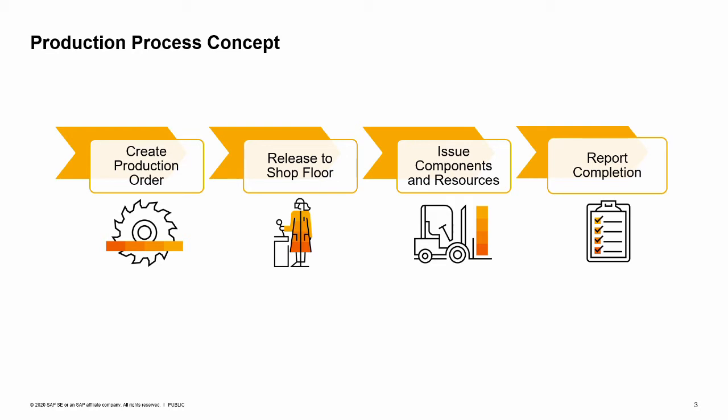Before work can begin, the production order status must be changed to Released. At this point, the production order can begin collecting the costs of production. Components used in the production process can then be released to the shop floor, depending on the issuing method.